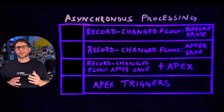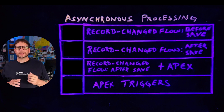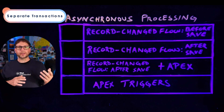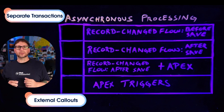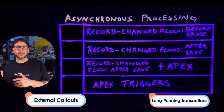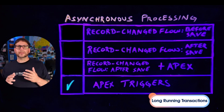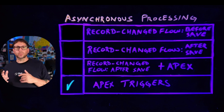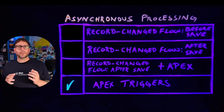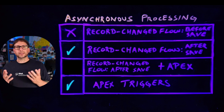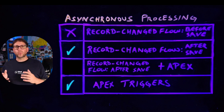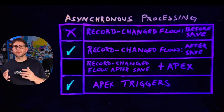Flow and Apex both offer solutions that will allow you to execute logic asynchronously for use cases like requiring separate transactions, making external callouts, or having transactions that will simply take too long to complete. For Apex, we recommend implementing asynchronous logic inside of a queueable class, and for Flow, we recommend using the run asynchronously path in an after-save Flow. A key consideration when deciding between a low-code and a pro-code approach is the amount of control that Apex will give you around callouts.